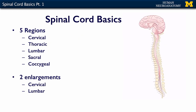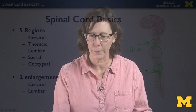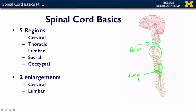The spinal cord has five different regions and two enlargements. The regions are cervical, thoracic, lumbar, and then sacral and coccygeal, just way down at the bottom. You have two enlargements: there's a cervical enlargement, which innervates your arm — it's an enlargement because you have a lot more neurons there for all the muscles in your arm. You also have a lumbar enlargement, which innervates your leg, or your lower extremity.